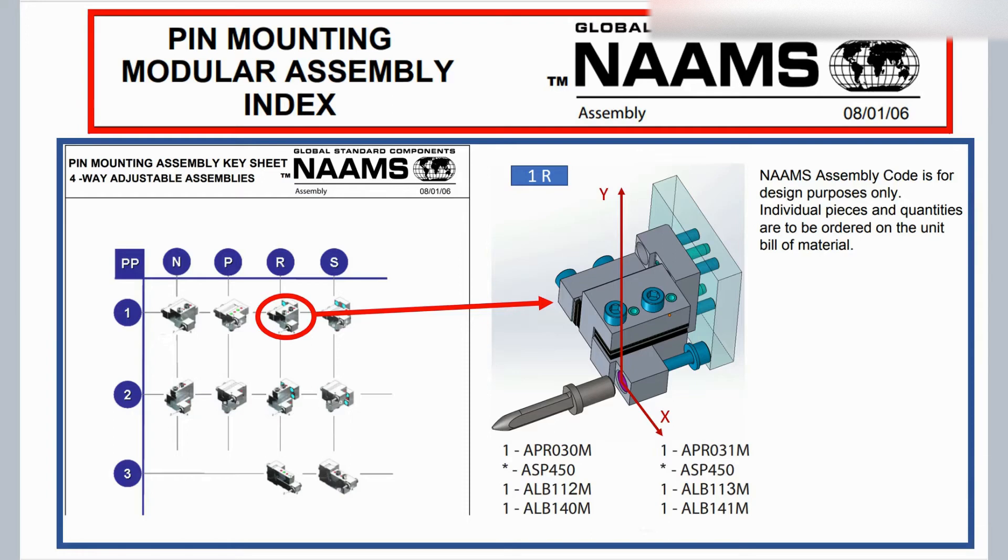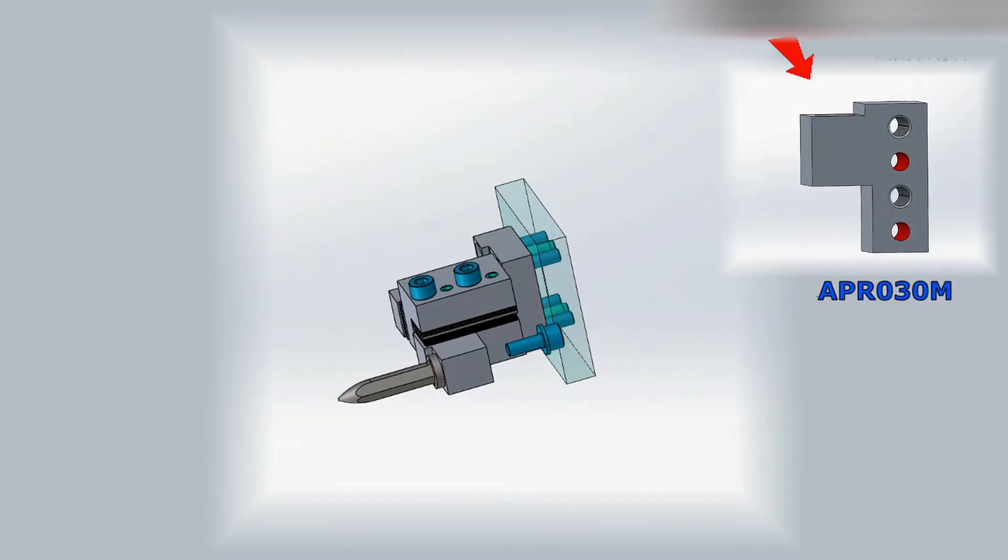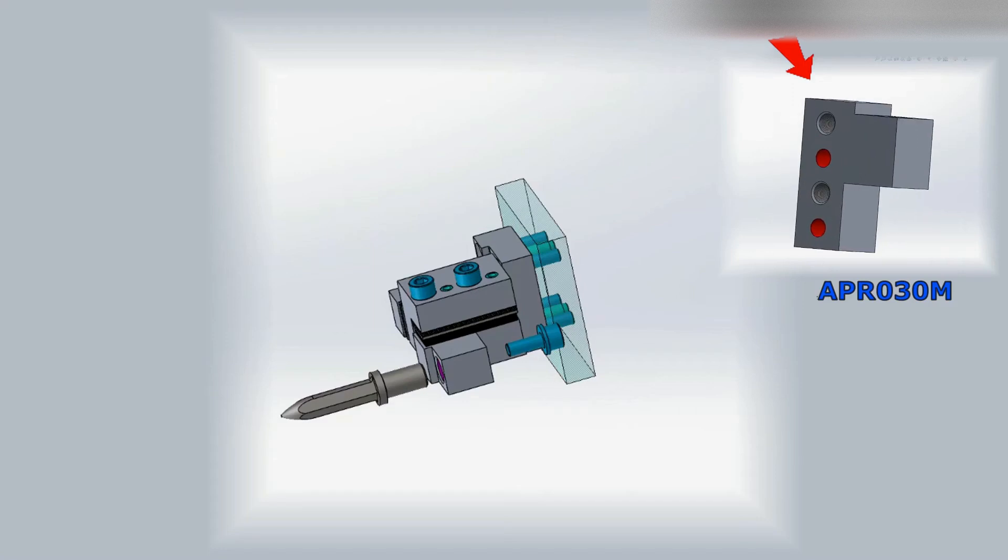Okay, we will review assembly code 1R, 4-way adjustable assembly, X and Y direction. So, the locating pin is mounting in the pin retainer APRL shape 4 side holes, APR030M. The pin locating shank is 16mm.